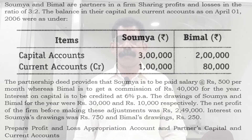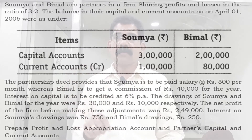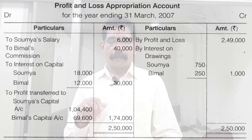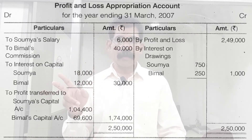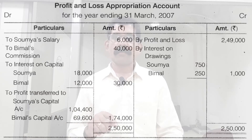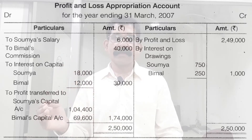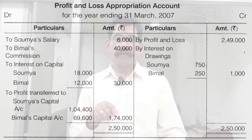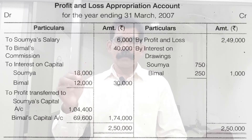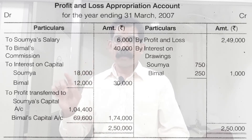We have to prepare the Partners Capital Account, Partners Current Account, and Profit and Loss Appropriation Account. In the Profit and Loss Appropriation Account, the first credit will be the profits transferred from the P&L account — Rs. 2,49,000. The next credit will be interest on drawings: Soumya Rs. 750 and Bimel Rs. 250, totalling Rs. 1,000 on the outer column. So the credit side is complete.